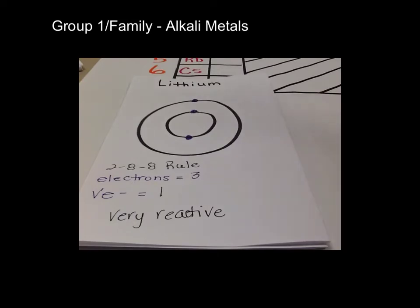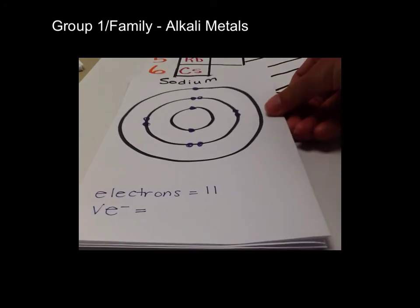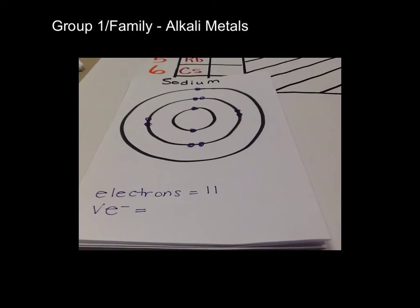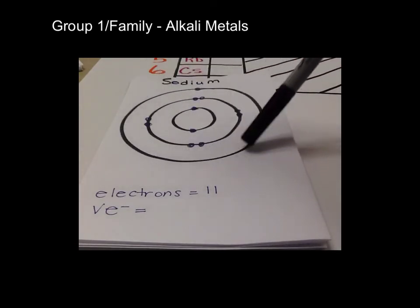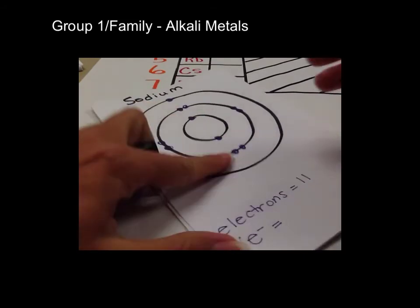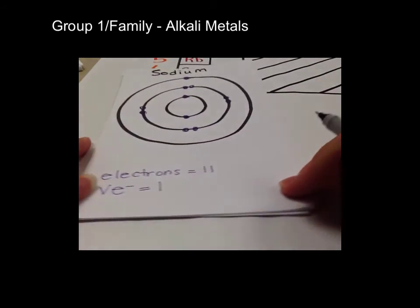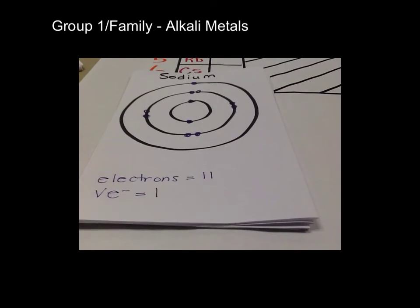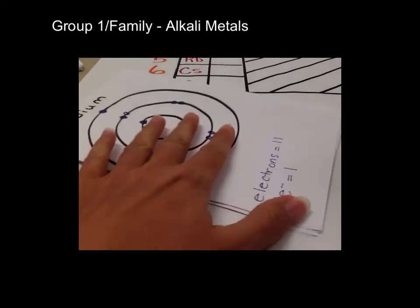Let's look at sodium. Sodium is also in group 1. It has three shells, and we know with our 2-8-8 rule that the third shell can hold up to eight electrons. How many valence electrons does sodium have? Well, in the outermost shell, it only has one valence electron. We know it can hold up to eight. So is it reactive or happy? It is very reactive as well.